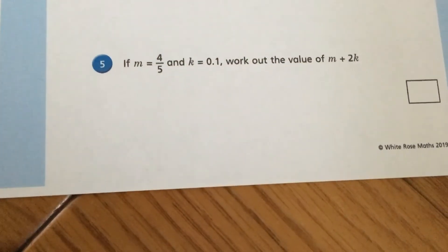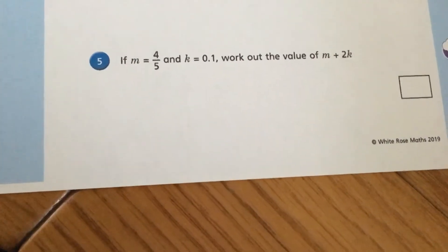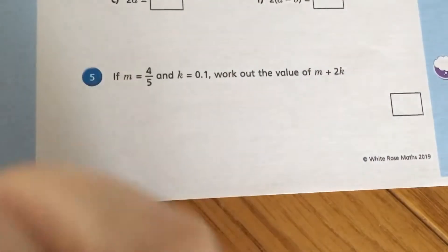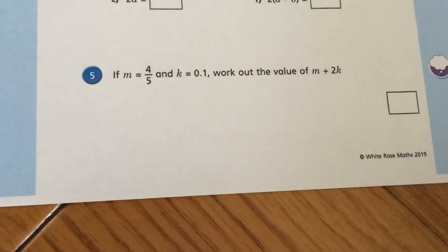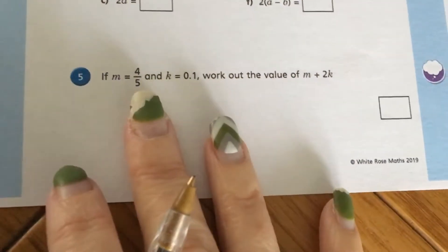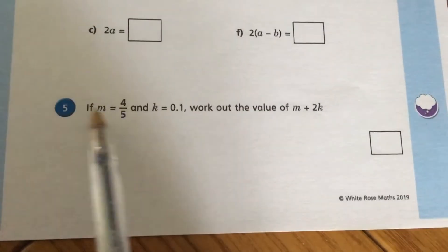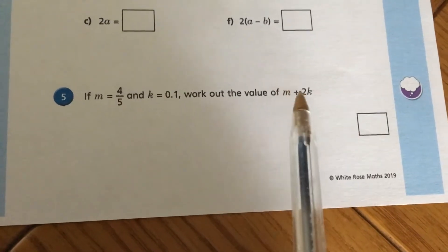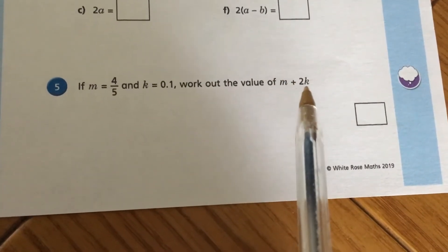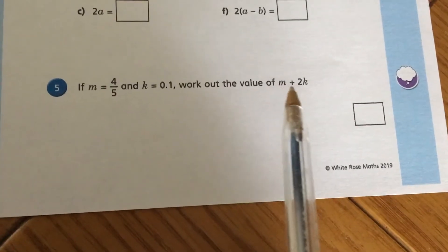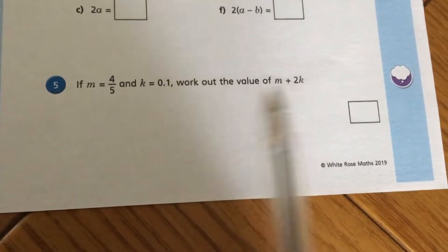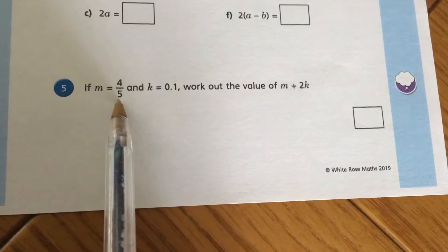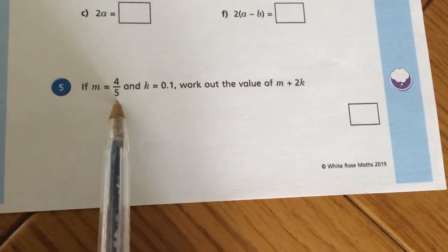So the first one I'm going to go through today is question 5. I'm going to link it back, if we remember our fractions, percentages and decimals work, the equivalents, because here we've got a fraction and we've got a decimal. So to work out the value of m plus 2k we have to have them in a similar format. So I'm going to choose to change my four-fifths into a decimal.